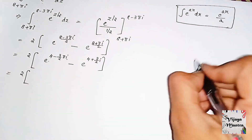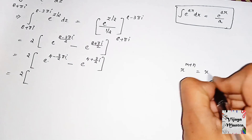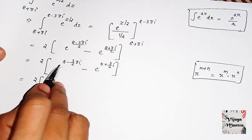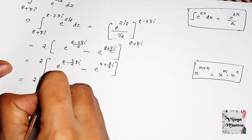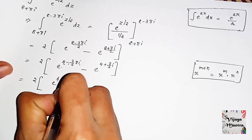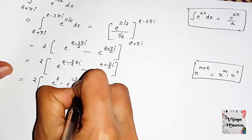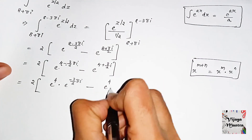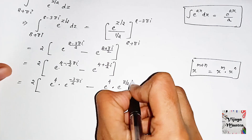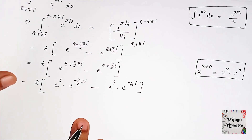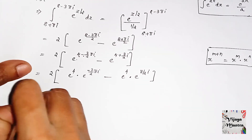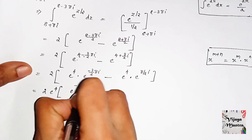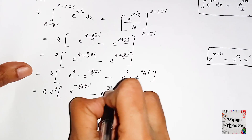Using the rule e^(m+n) = e^m · e^n, we split the exponents. So e^((8−3πi)/2) becomes e^4 · e^(−3πi/2), and e^((8+πi)/2) becomes e^4 · e^(πi/2). Taking e^4 as common: 2·e^4 times [e^(−3πi/2) − e^(πi/2)].